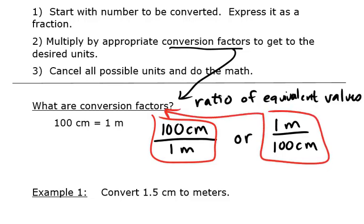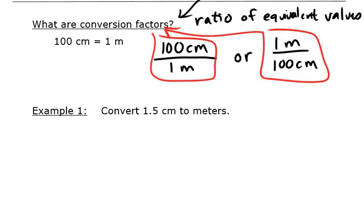Let's use that in an example where we need to convert. Let's say we needed to convert 1.5 centimeters to meters. The conversion factor is the one that has the units you started with and the units you want in that ratio.